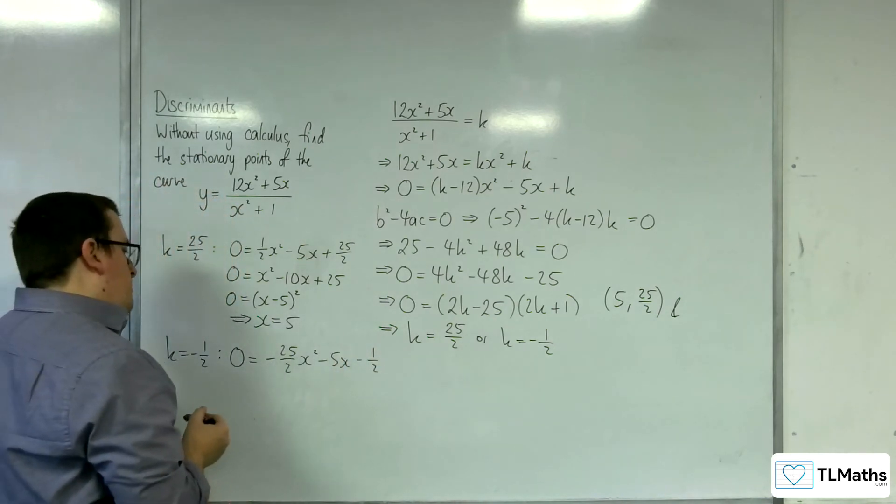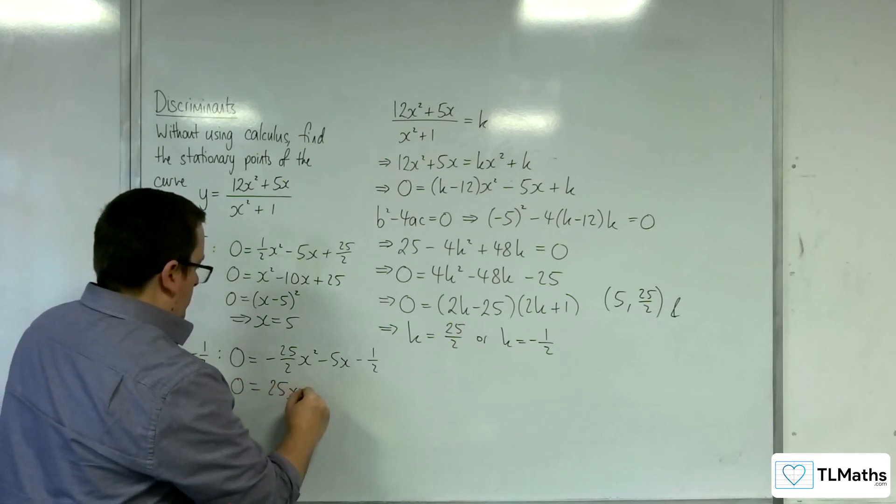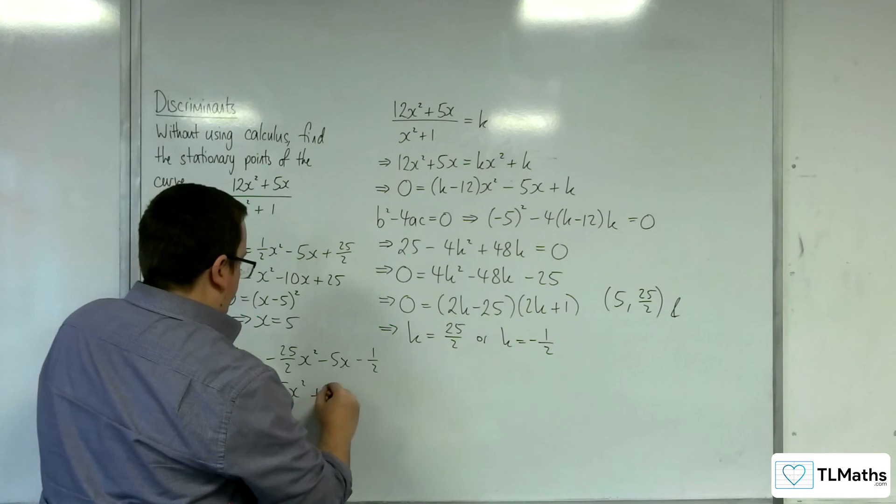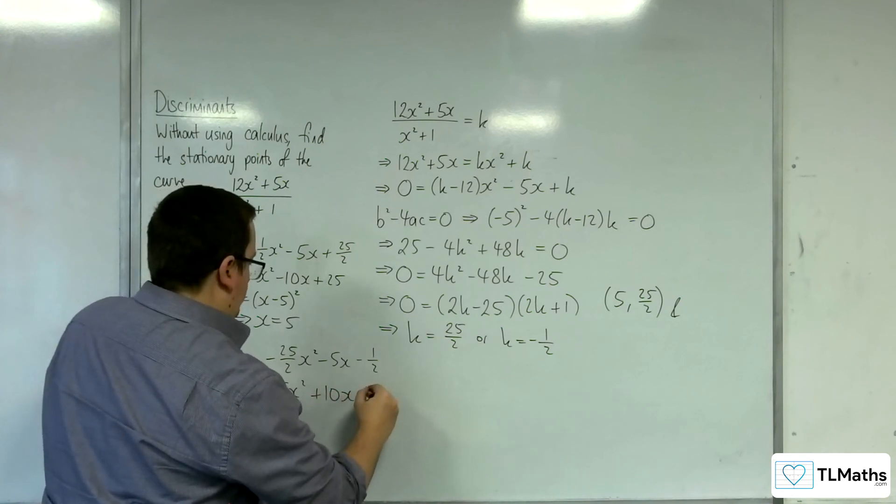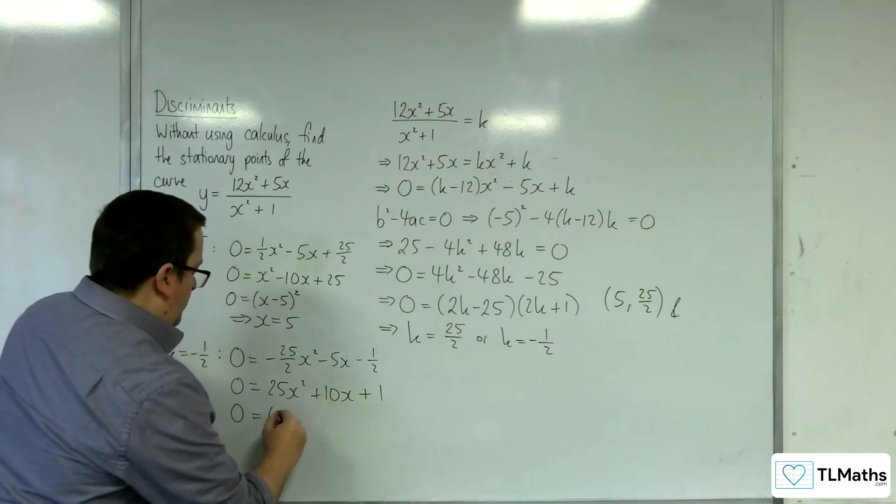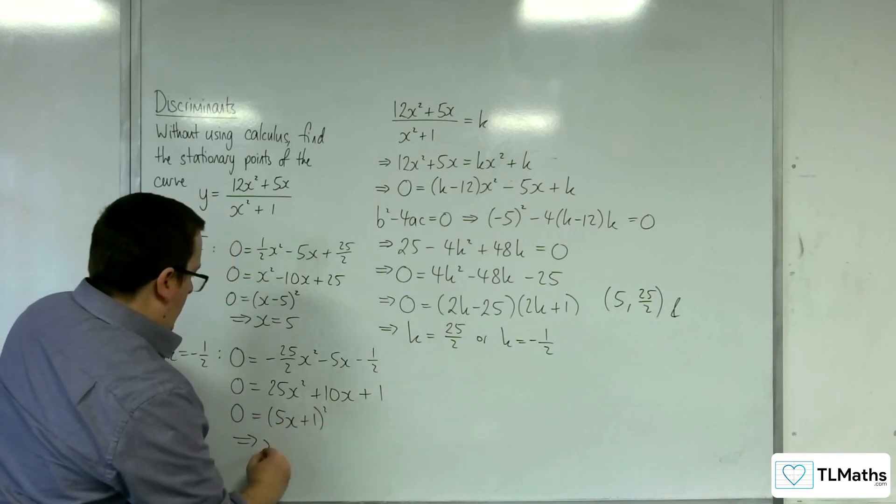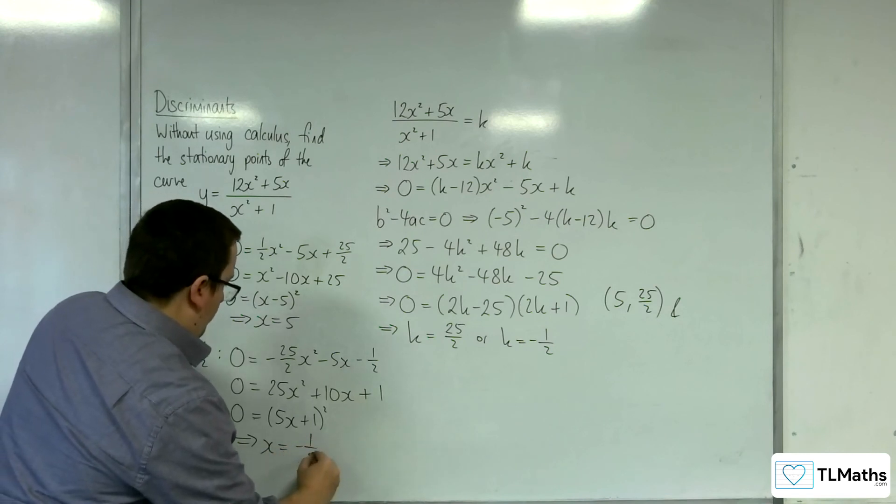I'm going to multiply through by minus 2. And so, that is going to factorise to 5x plus 1 all squared. So, x is going to be equal to minus 1 fifth.